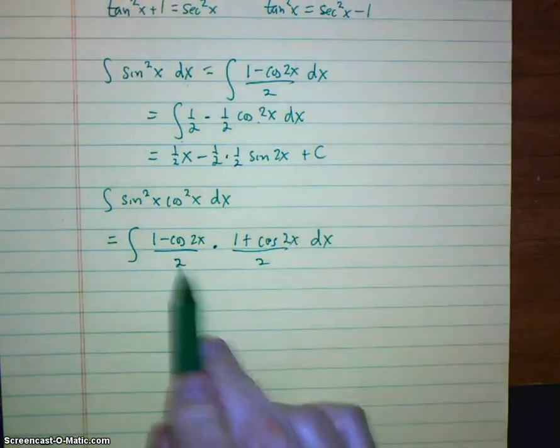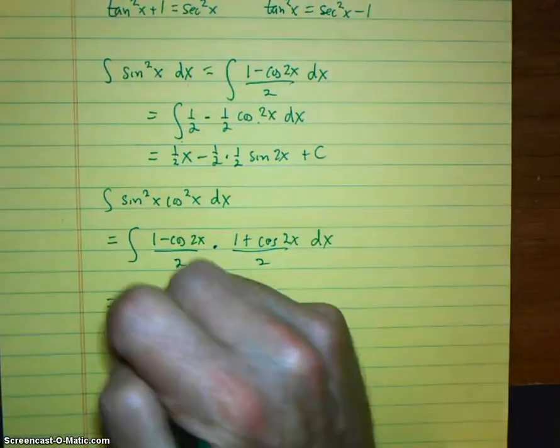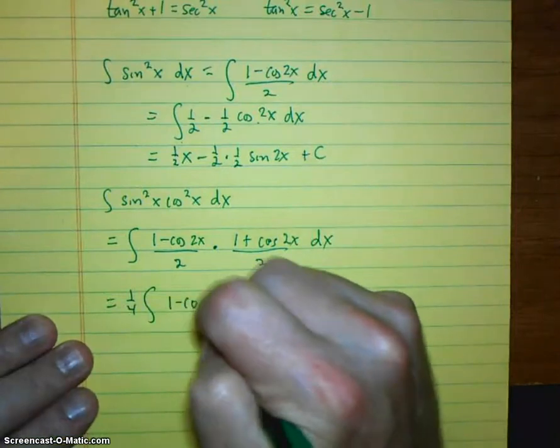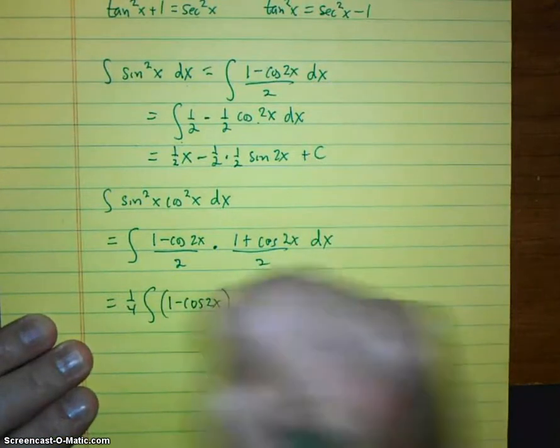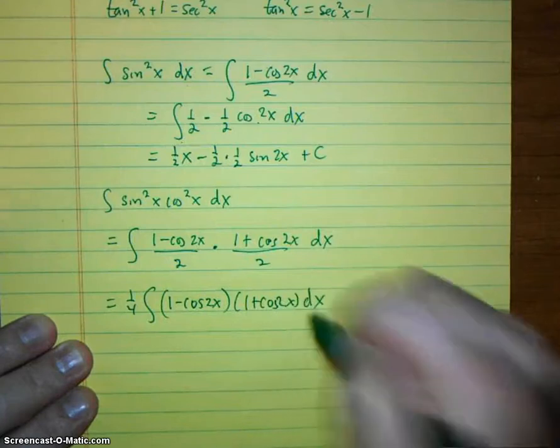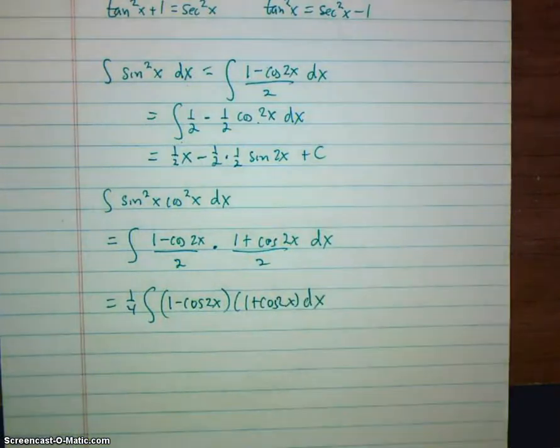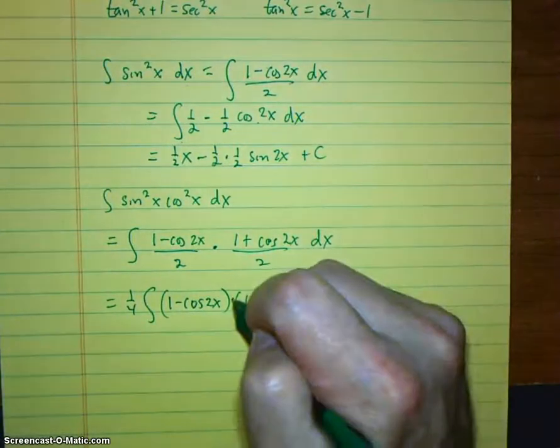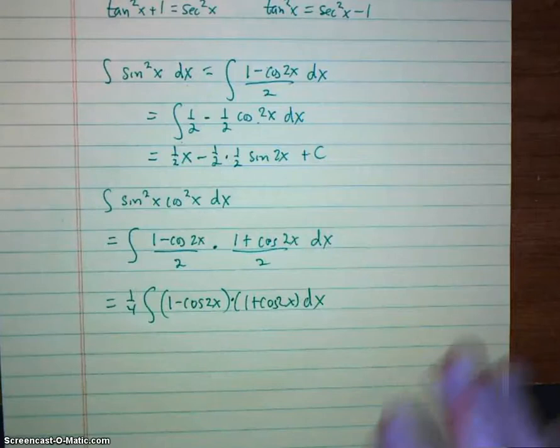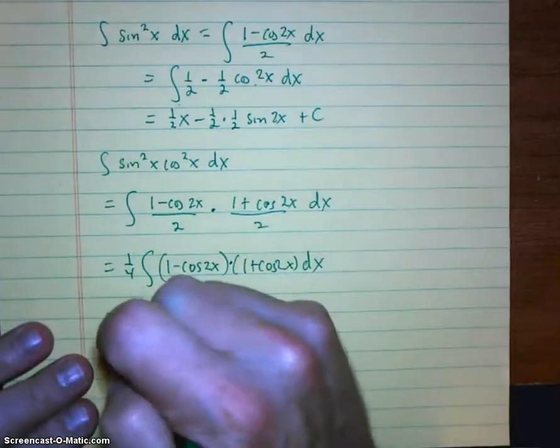So I'm going to take both of these 2's and just pull them out front. So that's 1 quarter integral. 1 minus cosine 2x times 1 plus cosine 2x. The issue now is that I still have multiplication here. I've got to get rid of that multiplication.